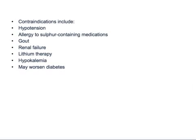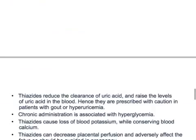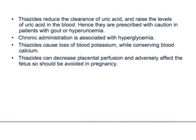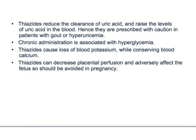Contraindications for thiazides include: hypotension, allergy to sulfa-containing medications — remember that — gout, and renal failure. Gout is a contraindication because one of the side effects of thiazides is hyperuricemia. Also contraindicated with lithium therapy and hypokalemia, and thiazides may worsen diabetes. Thiazides reduce the clearance of uric acid and raise blood uric acid levels, so they should be prescribed with caution in patients with gout or hyperuricemia. Chronic administration can also cause hyperglycemia, so thiazides should be used cautiously in diabetic patients.